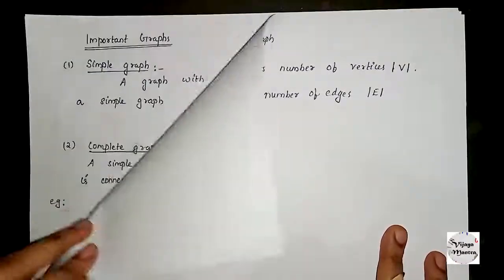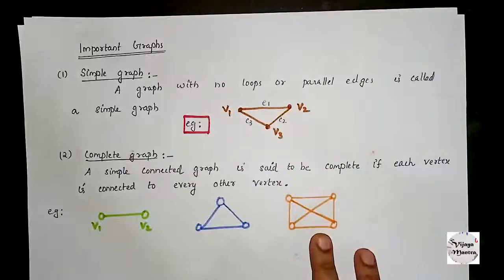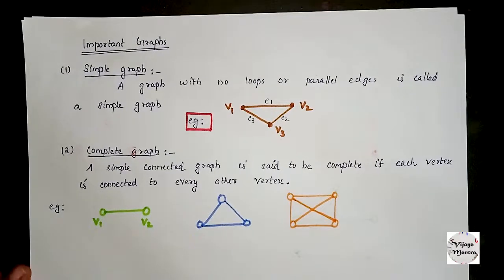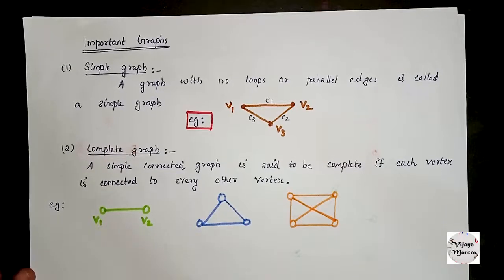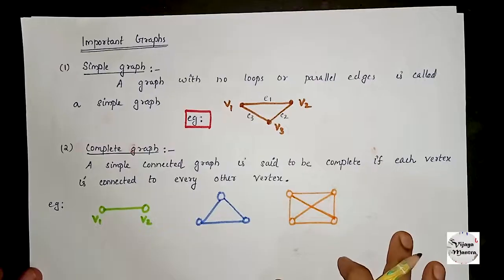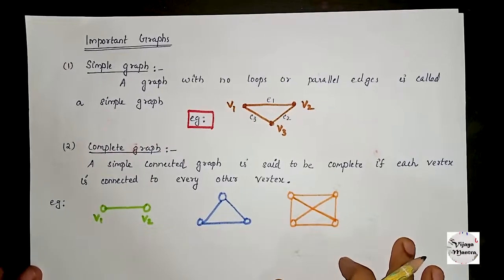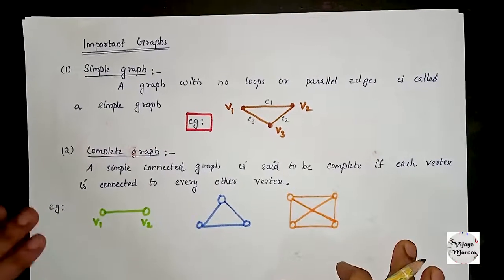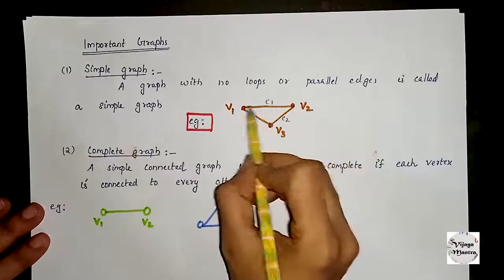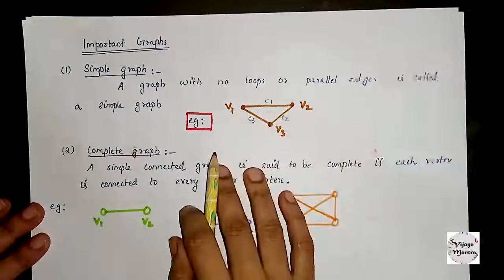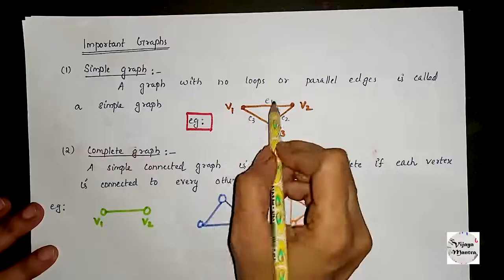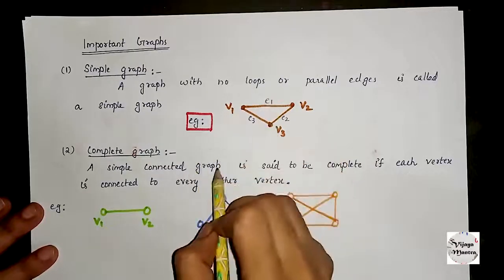Now we will discuss types of graphs. The first type is the simple graph. A graph with no loops or parallel edges is called a simple graph.